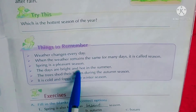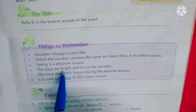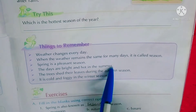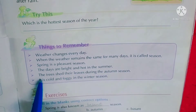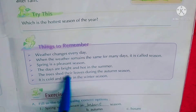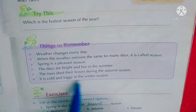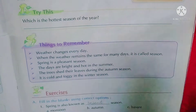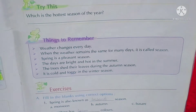The days are bright and hot in the summer - दिन बहुत चमकीले और बहुत गर्म होते हैं गर्मी में। In autumn, the trees shed their leaves - पतझड़ में पेड़ अपने पत्ते गिरा देते हैं। It is cold and foggy in winter season - सर्दियों में कोहरा लगा होता है, बहुत ठंडा होता है।